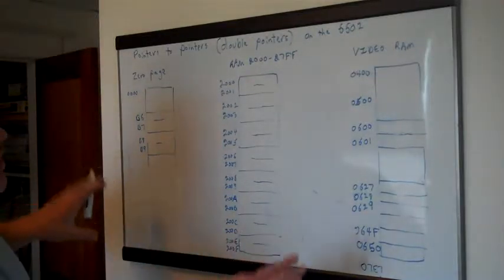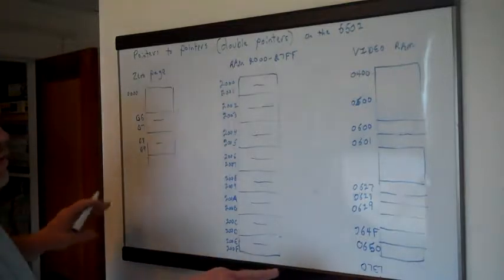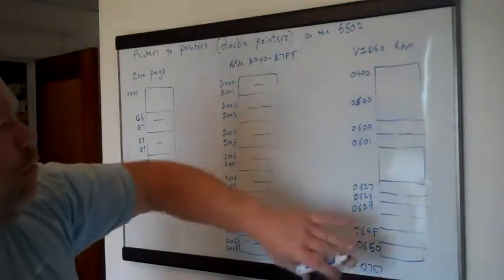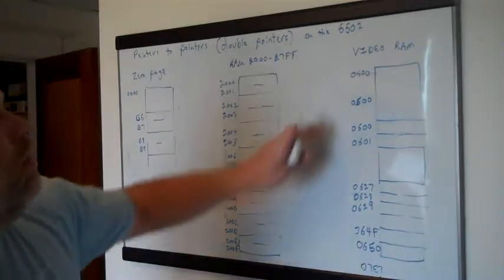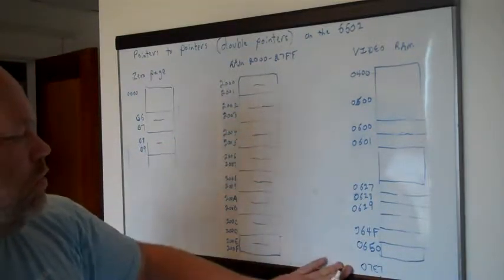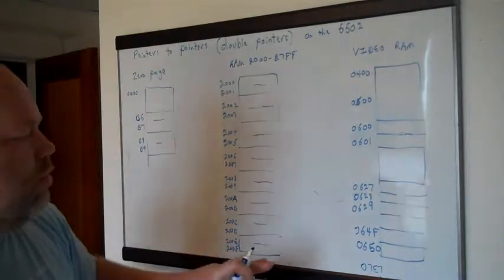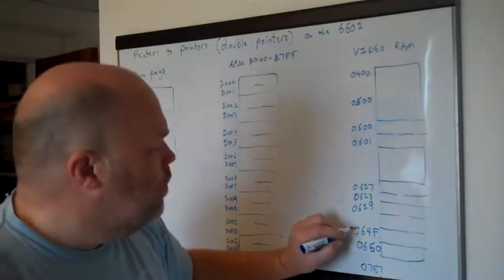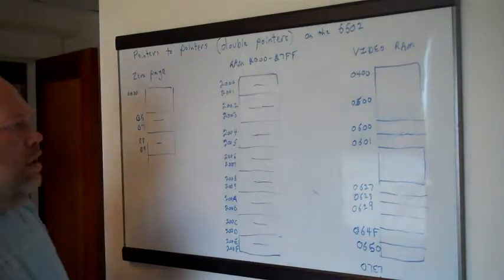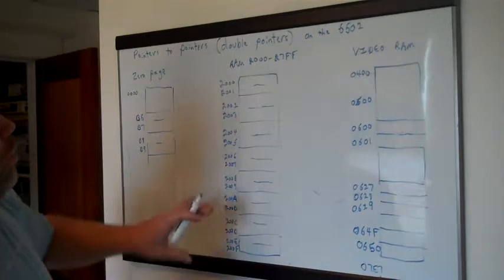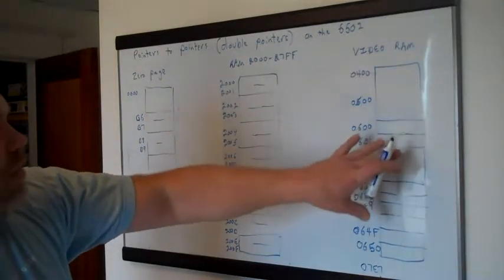We've got three different areas of RAM or memory that we care about here. One is the video RAM — this is where we put the characters that we want displayed on the screen. It runs from 0400 to 07E7, and all these numbers are hexadecimal by default because it's just easier. Each location is eight bits and can hold a character.